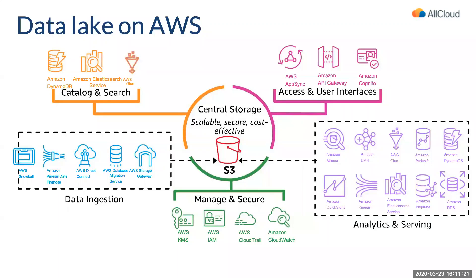To get data into S3 there are a number of mechanisms: you can bulk load data using Amazon Snowball or Snowmobile; stream data using Kinesis or Kafka; do an S3 copy using CLI, SDK, VPN, or Direct Connect; migrate OLTP databases using Database Migration Service (DMS); or leverage hybrid storage solutions like Storage Gateway to seamlessly migrate data into S3.